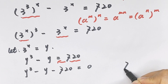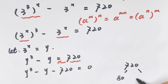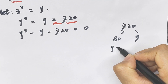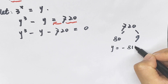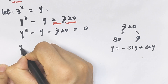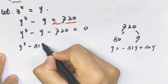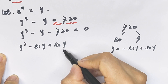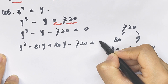720 is equal to 80 times 9, and the middle term y can be split as negative 81y plus 80y. So we rewrite as y cubed minus 81y plus 80y minus 720 equals 0.